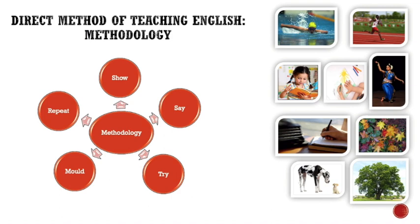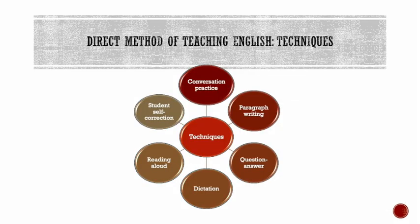The teacher shows the picture of a girl who is reading and says about it: a girl is reading. After saying and hearing by the learner, he or she tries to speak about it. If he or she makes any mistake in speaking, the teacher does correction without translating it into the mother tongue of the learner. The learner then tries to speak once again in a corrected form. Direct method is useful in the development of communicative skills because it lays stress on oral skill development.